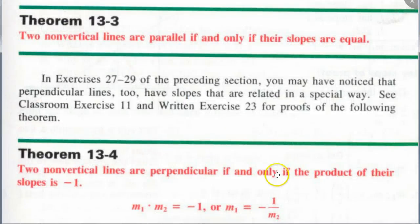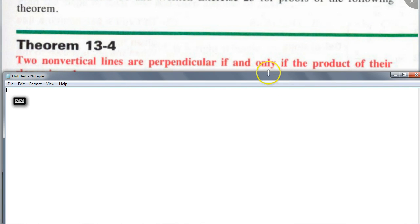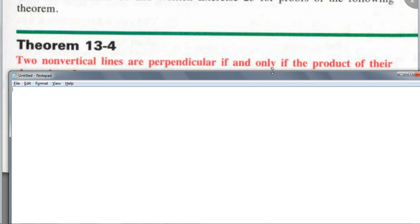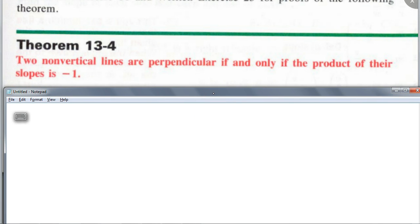Let's look at the next theorem about perpendicular lines. Write this down: two non-vertical lines are perpendicular if and only if the product of their slopes is negative 1. They say non-vertical because a vertical line is perpendicular to a horizontal line, but we can't multiply their slopes — slope of a vertical line is undefined, slope of a horizontal line is zero. Multiplying undefined times zero doesn't give negative 1, so that's why it doesn't work for horizontal and vertical lines.